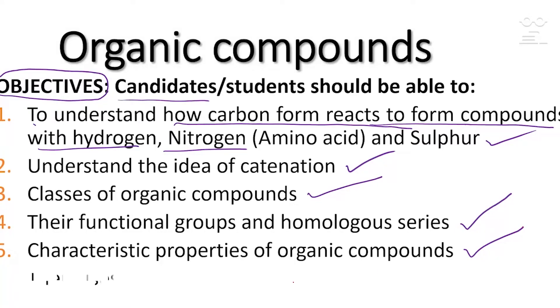Catenation is the combination of carbon atoms in straight or branched chains. Students should be able to understand the classes of organic compounds, the functional groups, and the homologous series. Also, the characteristics or properties of organic compounds and their uses. Most importantly, students should be able to answer questions that they are confronted with.